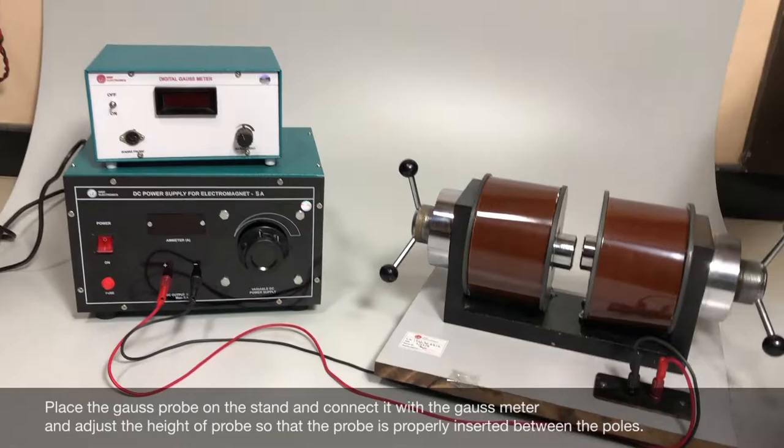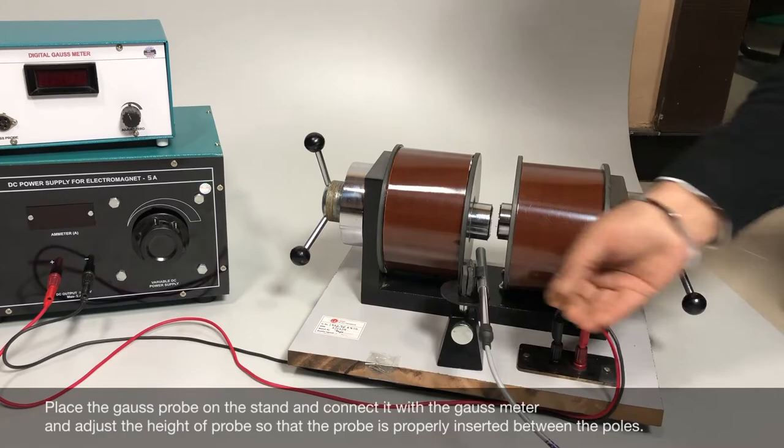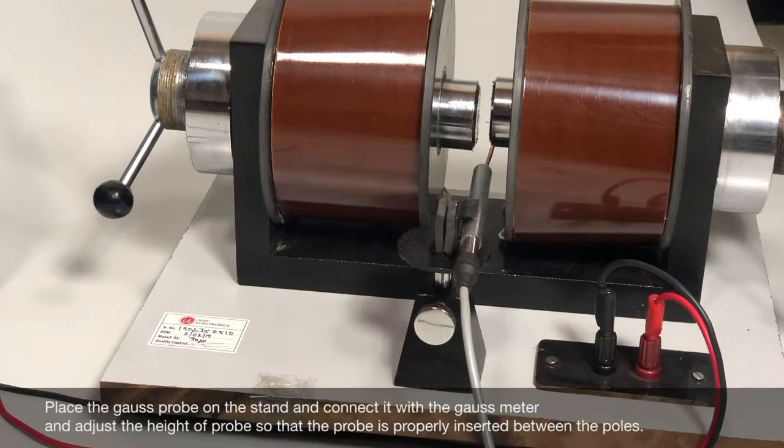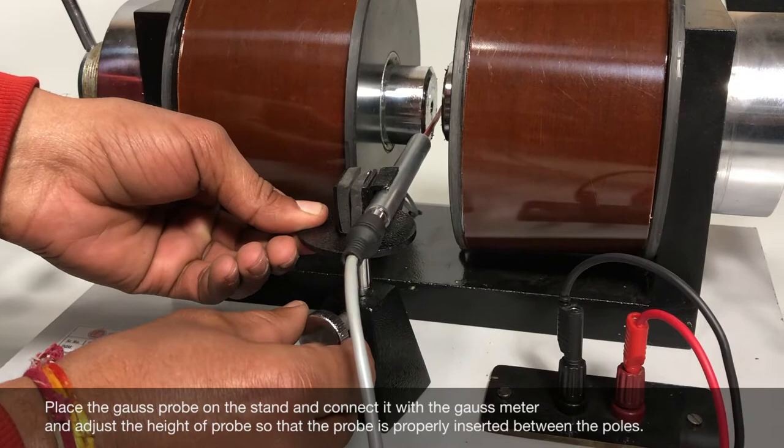Place the gauss probe on the stand and connect it with the gauss meter. Adjust the height of probe so that the probe is properly inserted between the poles.